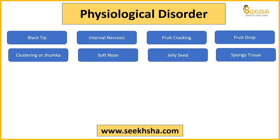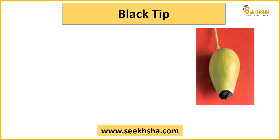Physiological disorders ke inder mango ke jo mainly physiological disorders hain discuss karne hain, uske inder aapka black tip aajayega, internal necrosis, fruit cracking, fruit drop, clustering aur jhumka, soft nose, jelly seed aur spongy tissue. Yeh 8 physiological disorders ko discuss karenge. Ek ek karke start karte hain black tip se.